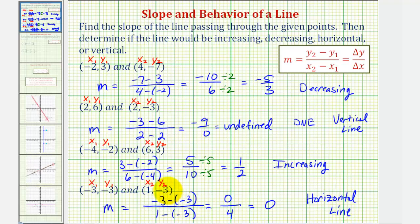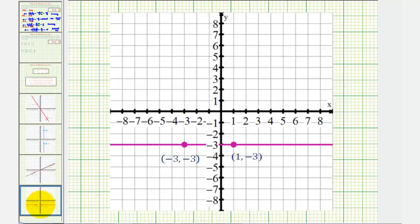If we take a look at this on the coordinate plane, here are the two given points. Notice in this case, the y-coordinates are the same, which is always true when we have a horizontal line. Notice as x increases, there's no change in y, and therefore the change of y is 0, regardless of the change of x, giving us a 0 slope and a horizontal line.